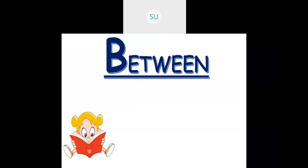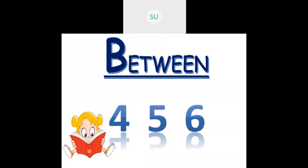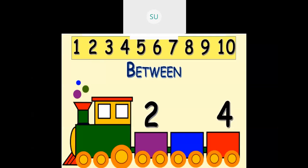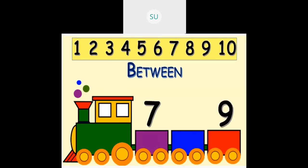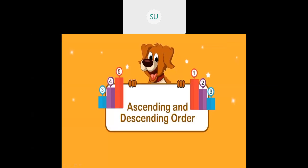Then between — here I have 3 numbers: 4, 5, and 6. If you see 5, it is in the middle of 4 and 6, so 5 comes in between 4 and 6. Let's guess between numbers. We have given 2 and 4 — which number comes in the middle? It is 3. Then 7 and 9 — what comes between them? It is 8.